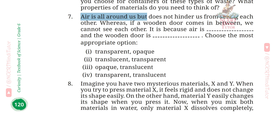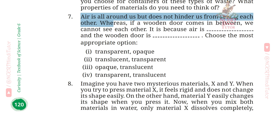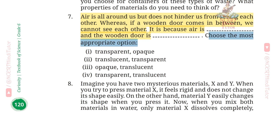Q7: Air is all around us but does not hinder us from seeing each other, whereas if a wooden door comes in between, we cannot see each other. It is because air is transparent and the wooden door is opaque. Choose the most appropriate option. Answer: Transparent, opaque.